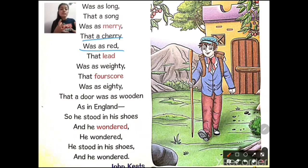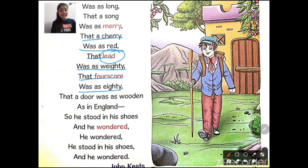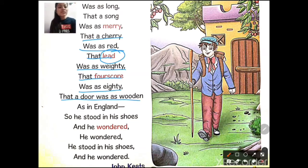A cherry was as red — the cherry fruit's color was as red as in England. Lead was as weighty — lead is a heavy metal, meaning the material in Scotland was the same as in England, no difference in weight. Four score was as eighty — four score equals 80, and that was the same in both countries. A door was wooden as in England — the doors were wooden, just as in England.